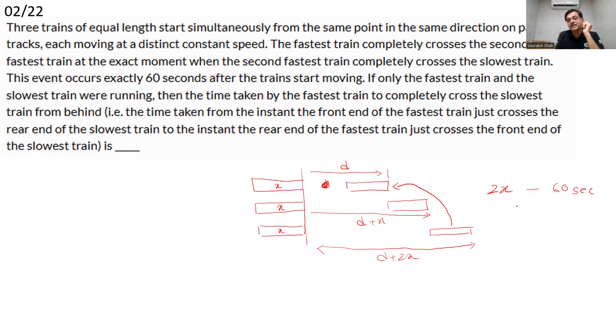That means we can say that the faster train has covered a distance of 2x more than the slowest train in 60 seconds. And of course, this is at a relative speed. The fastest train has covered 2x, a distance of 2x more than the slowest train, in 60 seconds. And x, x are the distances, remember, at their relative speed, which you don't know right now.